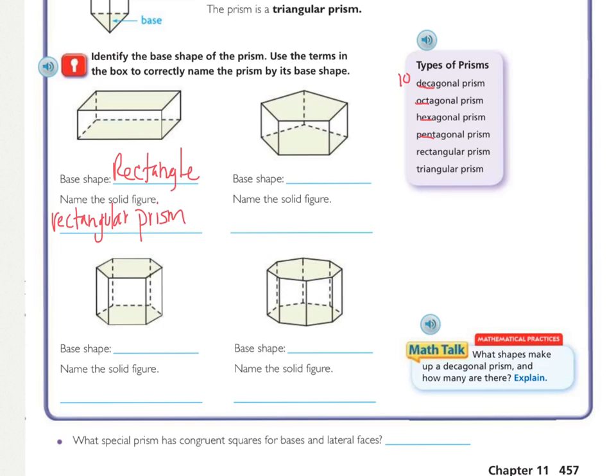This second shape, there's one, two, three, four, five sides. So a five-sided figure is called a pentagon. Because there's a pentagon here and on the bottom, that makes it a prism. So it is a pentagonal prism.